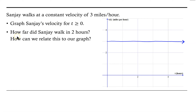Now we have a question: how far did Sanjay walk in 2 hours, and how can we relate this to our graph? Our horizontal axis represents the period of time for which Sanjay has been walking at 3 miles per hour. If we're interested in how far Sanjay walked in 2 hours, we're looking at a time duration between t equals 0 and t equals 2. We can think about the meaning of the area between the horizontal line and the t-axis.